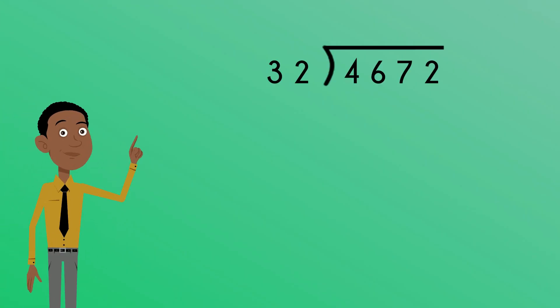Let's start with this problem – 4,672 divided by 32. When we were dividing by a one-digit number, we broke up our dividend and worked through one digit at a time. We're still going to need to break up our dividend.